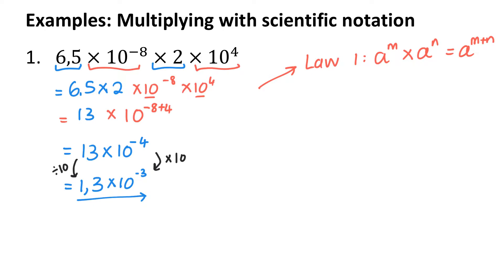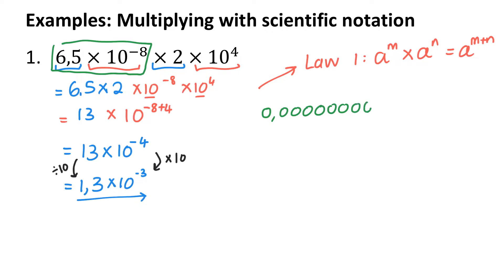Another way to do this multiplication would be to expand each part of the scientific notation and then multiply. The first part, 6.5 times 10 to the power of negative 8, expands to 0.000000065. And 2 times 10 to the power of 4 is 20,000.